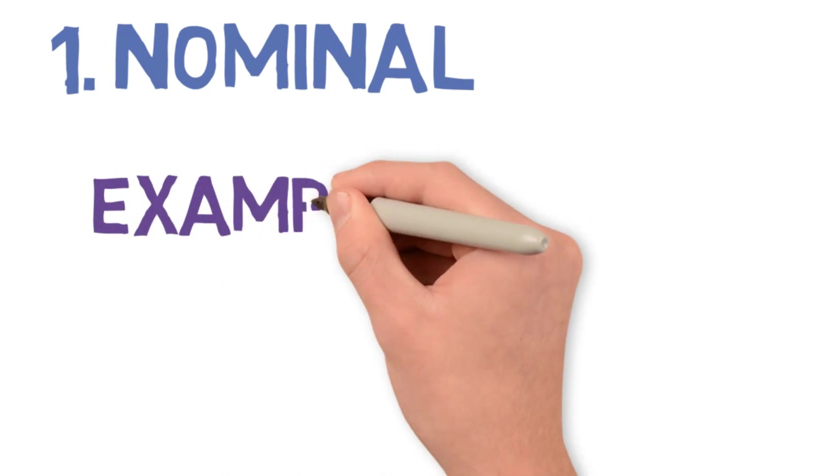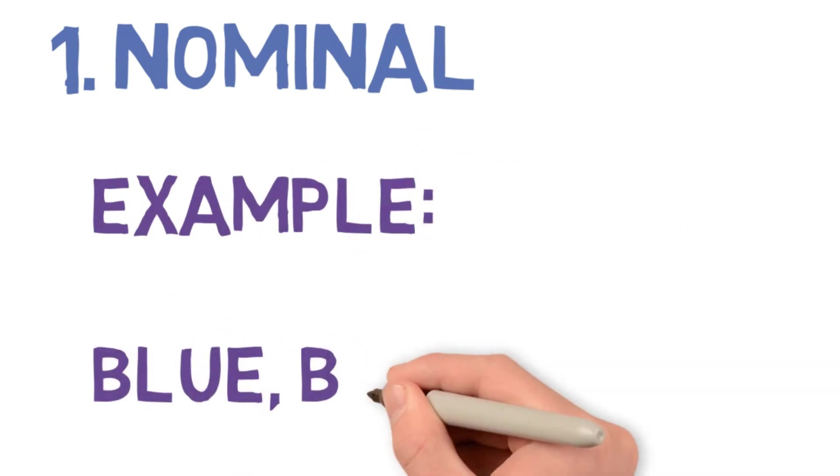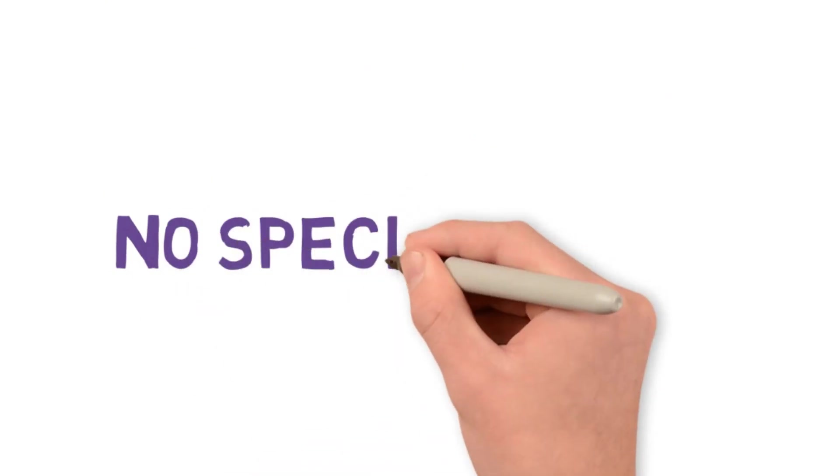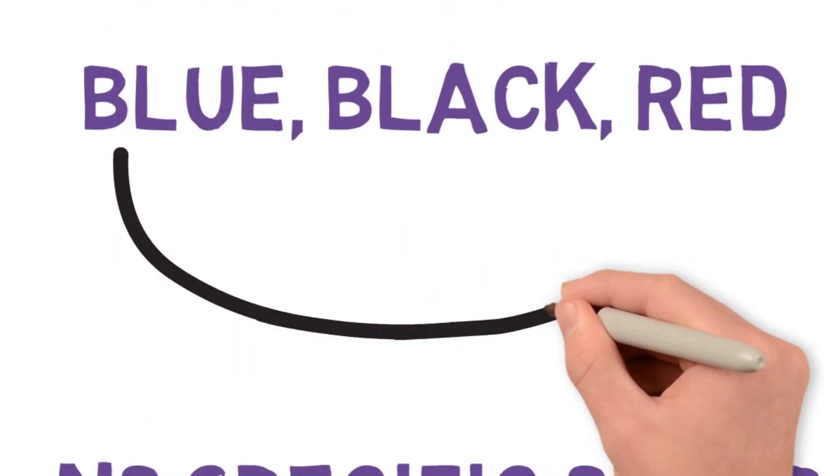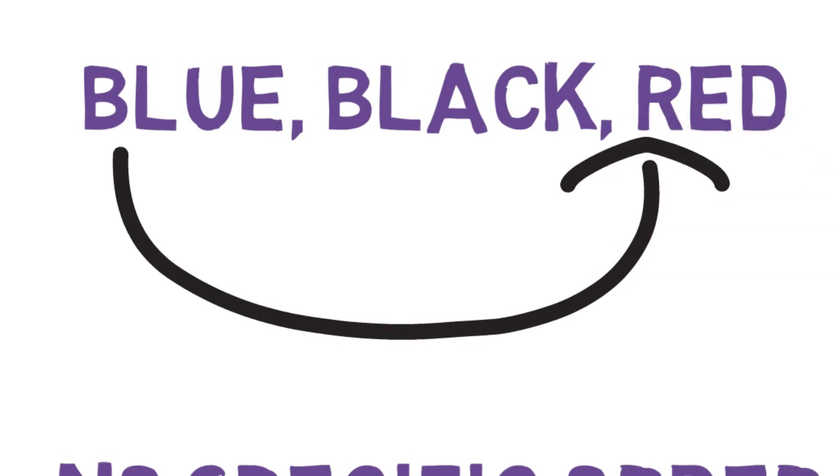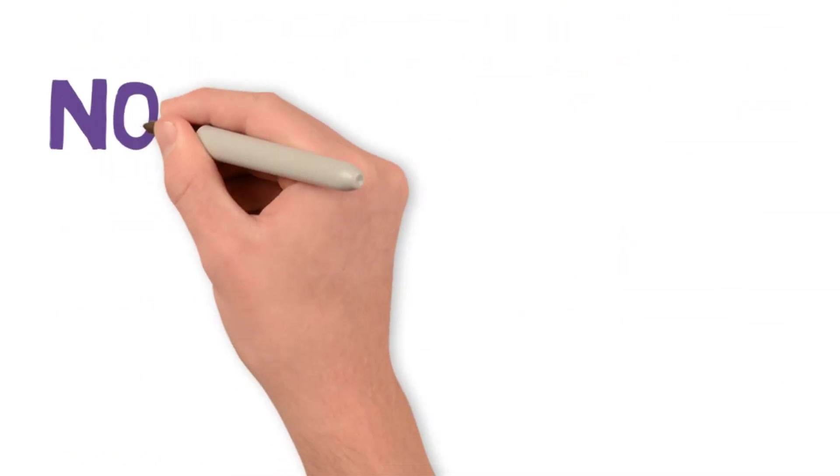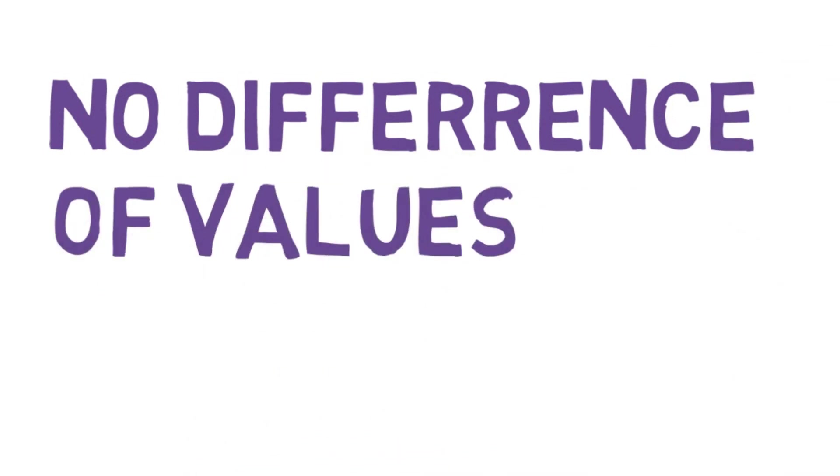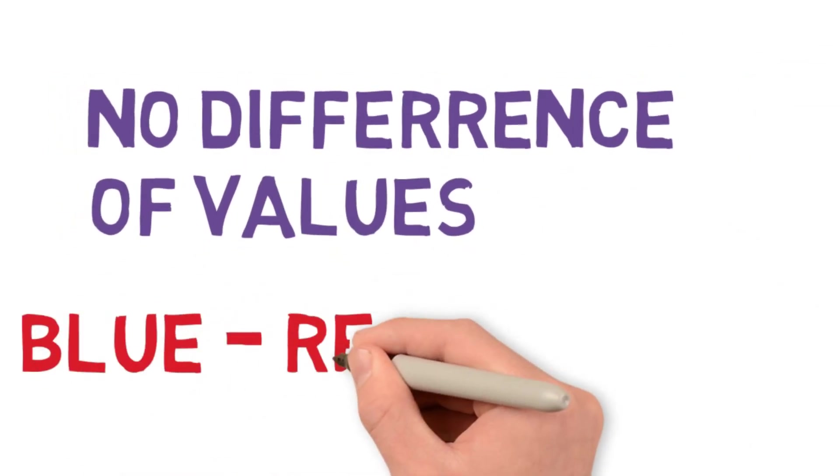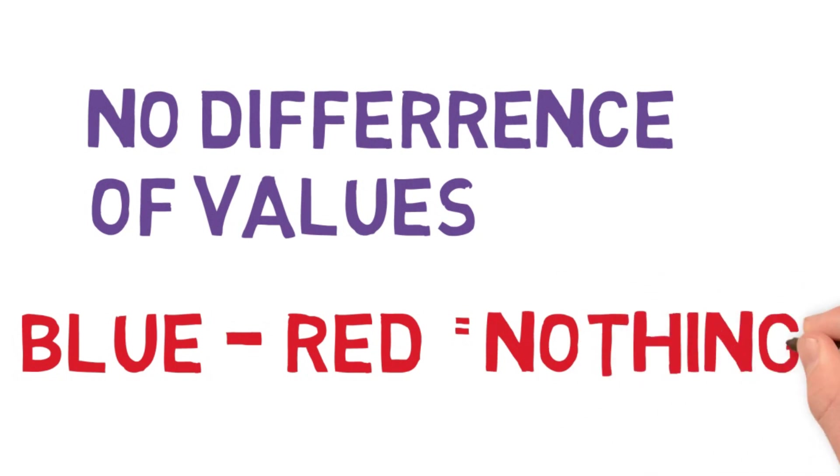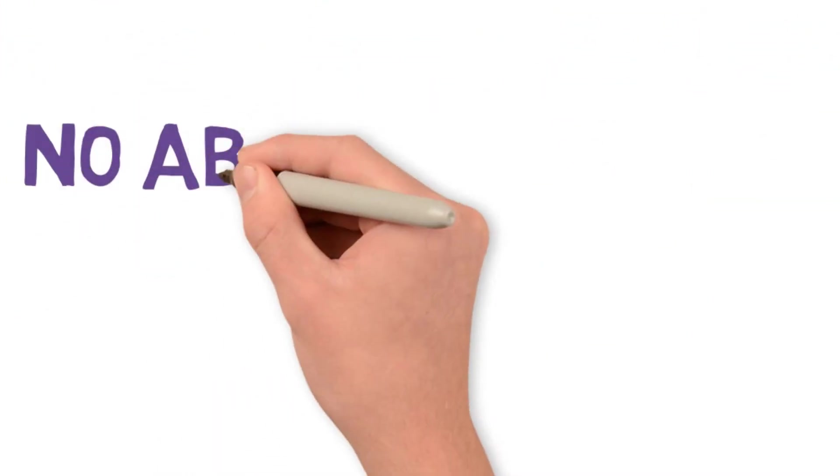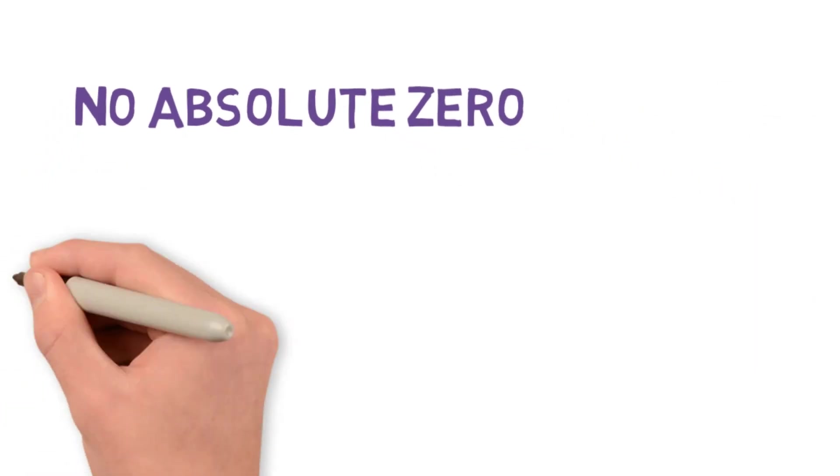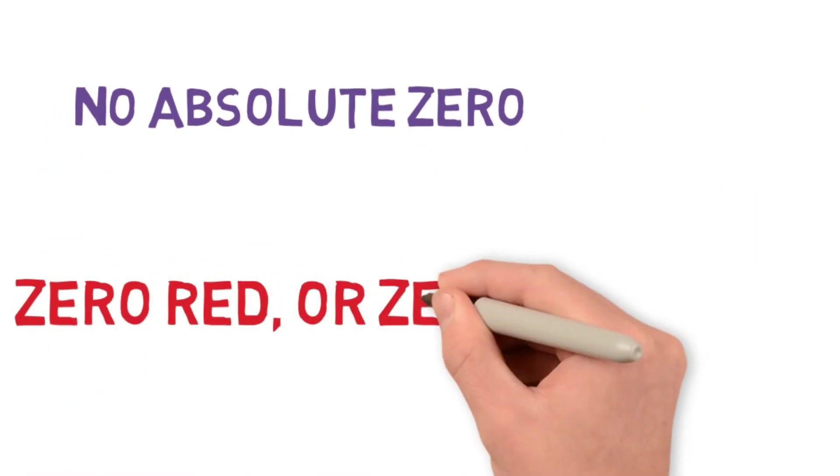Let's look at nominal. An example of nominal data are colors: blue, black, red. These are colors, and there is no specific order between these values. Blue can be first, or red can be first, or black can be first. And there is no difference of values between them. For example, blue minus red is nothing. And no absolute zero. There is nothing called zero red or zero blue.